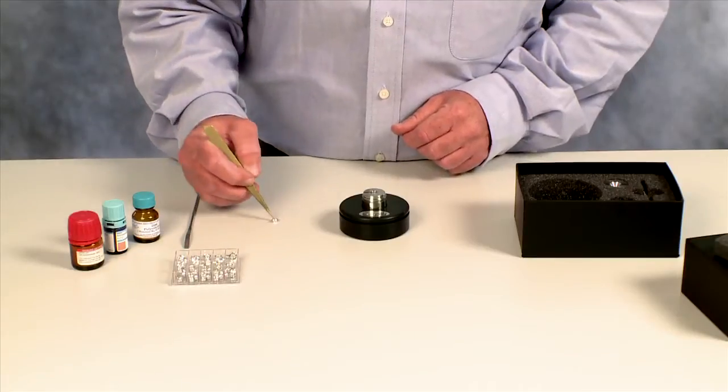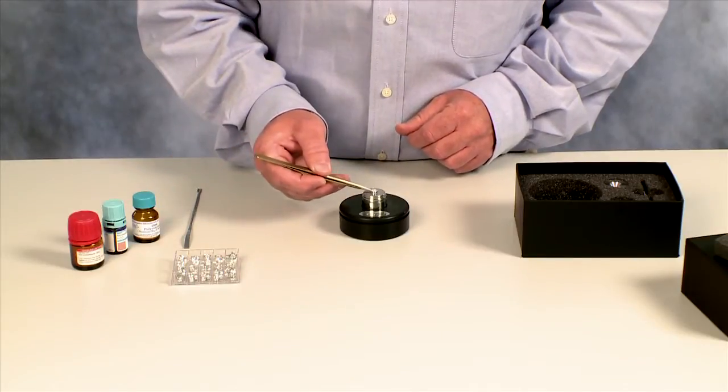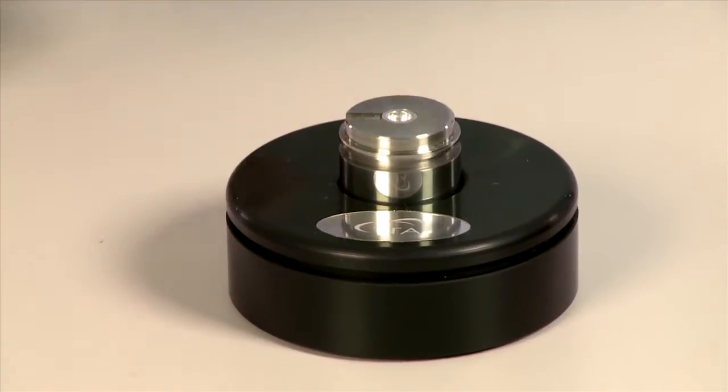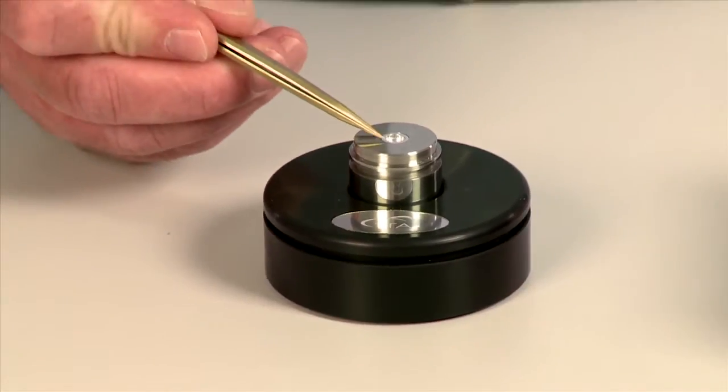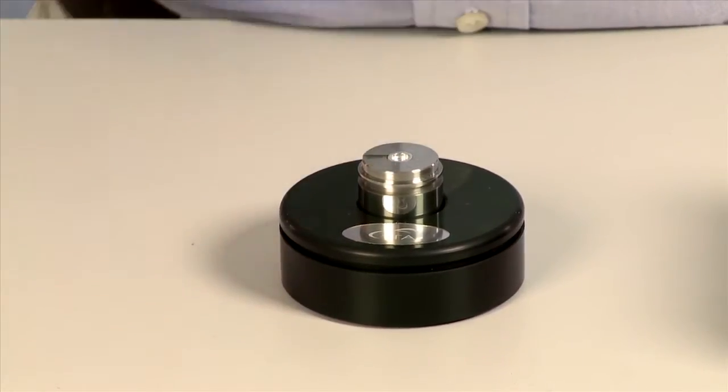And then you take your T0 pan and you load it in just like that. Now the lid of the pan sits flush with the tool right here.